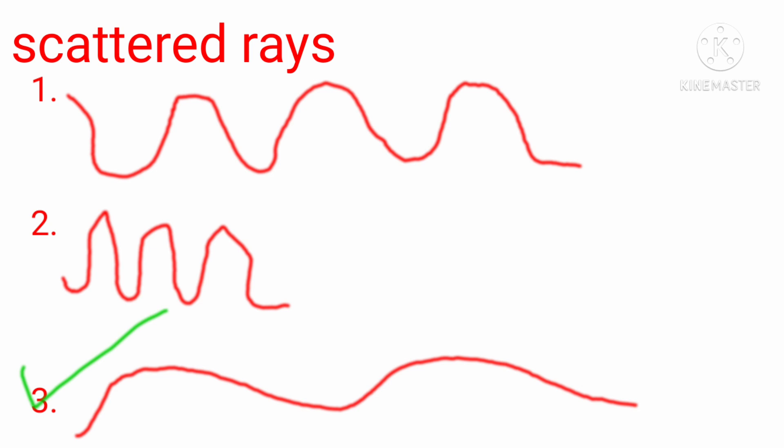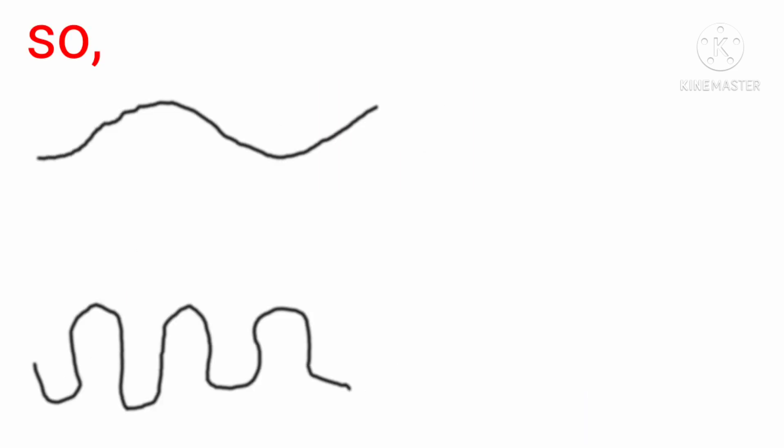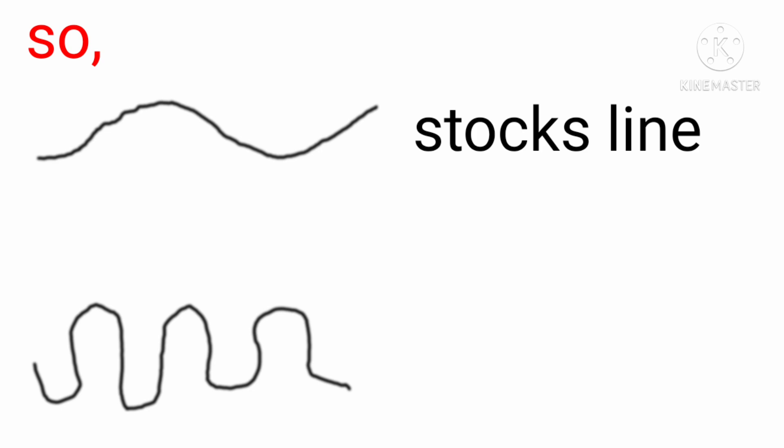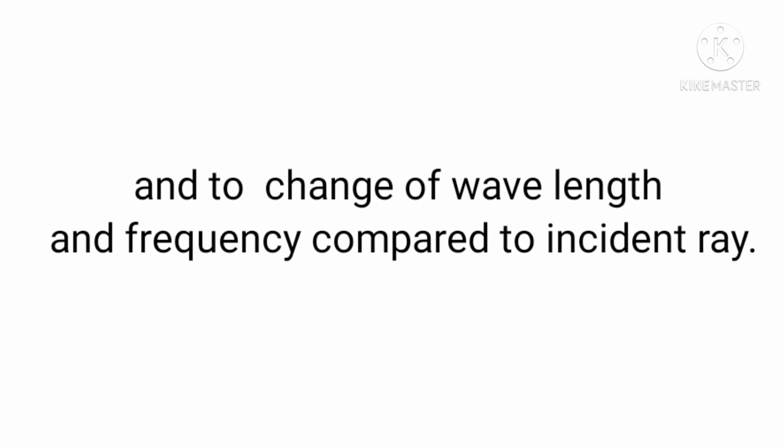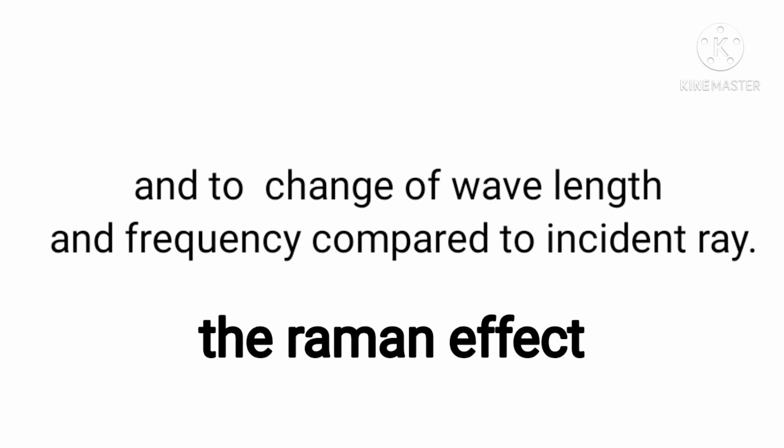Some scattered rays have more wavelength and less frequency. The one with high wavelength and low frequency is called the Stokes line, and the one with high frequency but small wavelength is called the Anti-Stokes line. Observing this change in wavelength and frequency compared to the original incident ray is known as the Raman Effect.